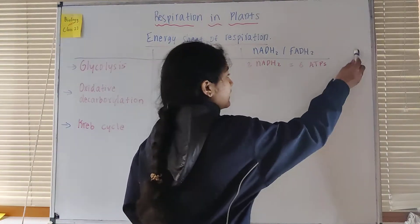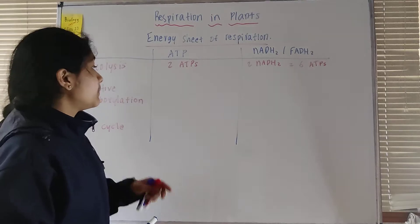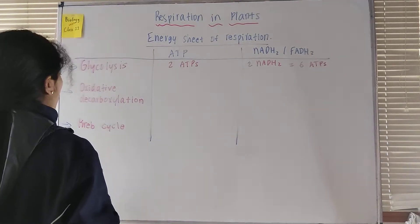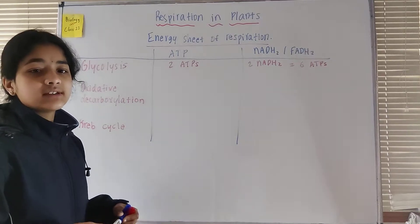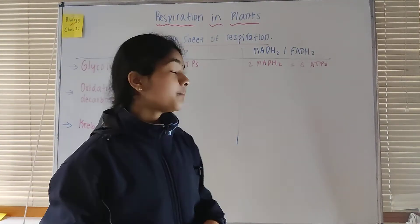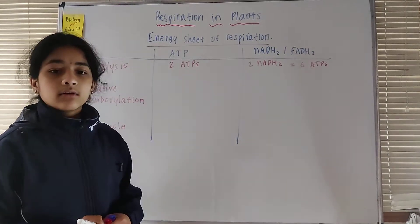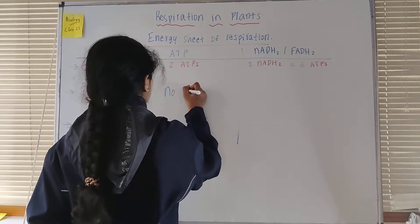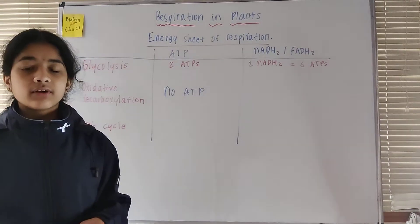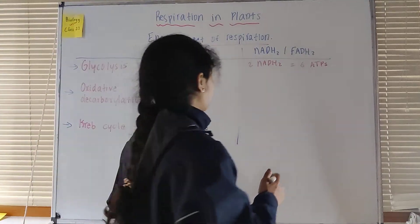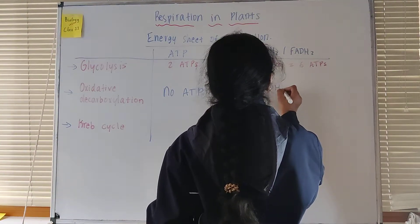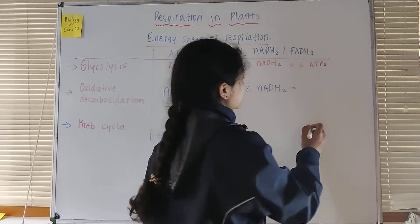Next we have oxidative decarboxylation. In this step, no ATPs are directly formed. For NADH2 or FADH2, two NADH2 are formed here, and this again gives us six ATPs.